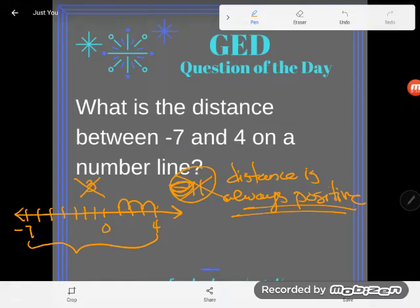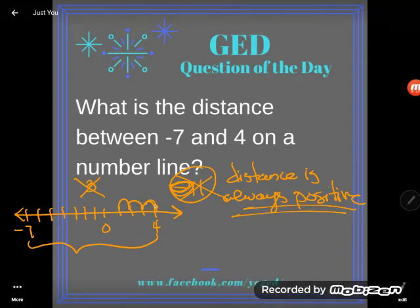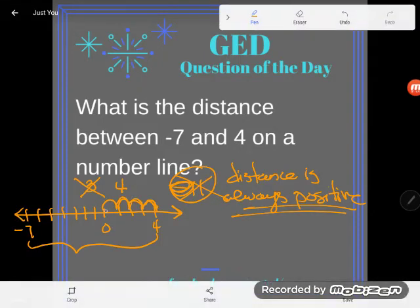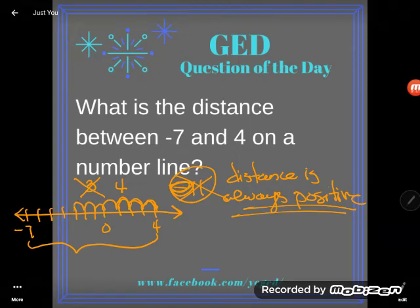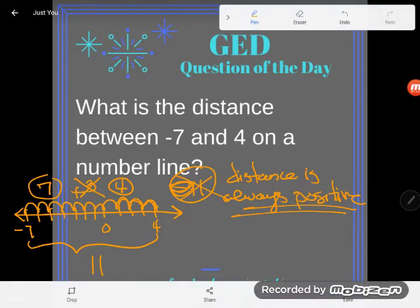So let's count between four and negative seven — what would the distance really be? From four to zero is one, two, three, four units. And then from zero to negative seven is one, two, three, four, five, six, seven units. I have four units and seven more units — a total of 11. Positive 11.